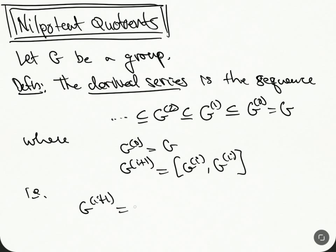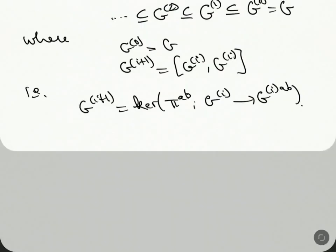is equal to the kernel of abelianization from G^(i) to G^(i) abelianized. This is what the derived series is.